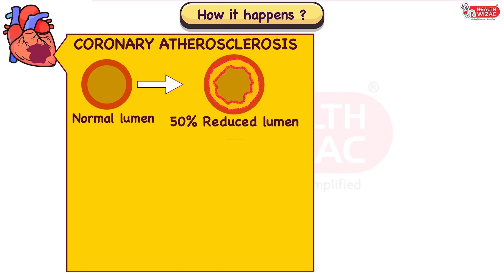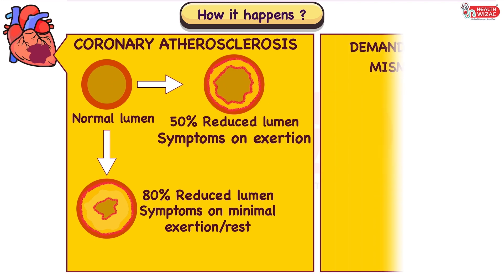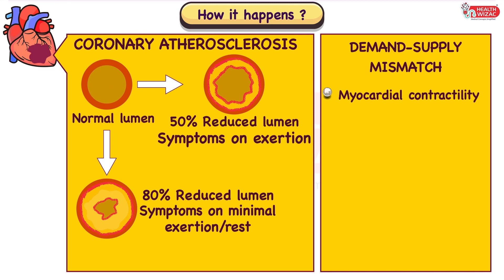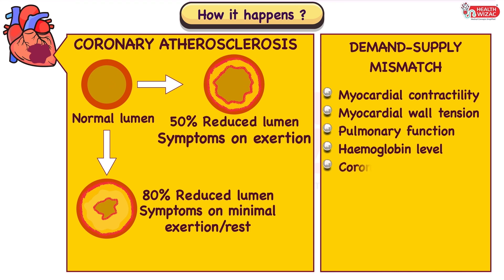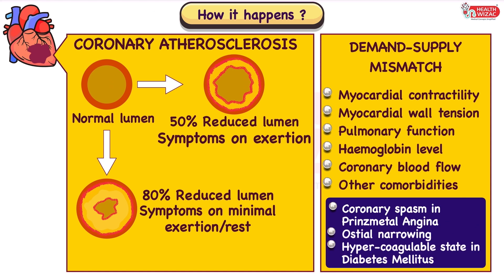Stenosis of 50% can present symptoms on exertion, whereas stenosis of 80% or more can have symptoms at minimal exertion or even at rest. The factors governing demand and supply mismatch include myocardial contractility, myocardial wall tension, pulmonary function, hemoglobin level, coronary blood flow, and other comorbidities. Apart from coronary atherosclerosis, coronary spasm as in Prinzmetal angina, ostial narrowing, and even hypercoagulable state as in diabetes can also precipitate the event.